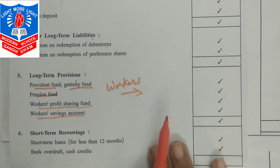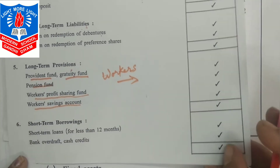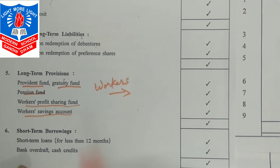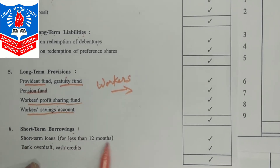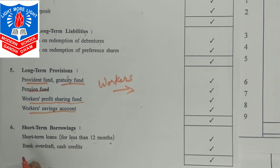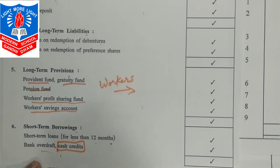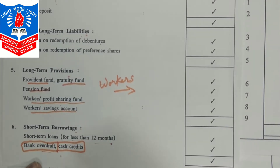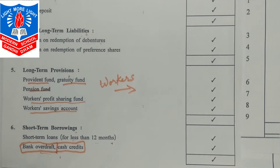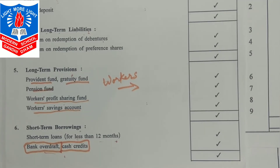Now let us start the last head under equity and liabilities — current liabilities. First: short-term borrowings include short-term loans (less than 12 months), bank overdraft, and cash credits. Bank overdraft and cash credit are short-term in nature and come under this point.